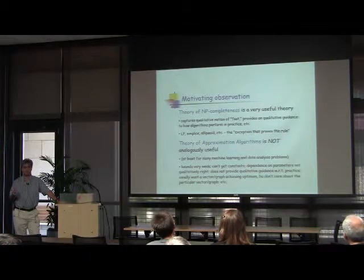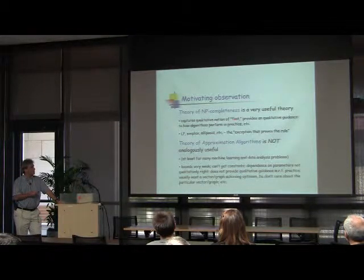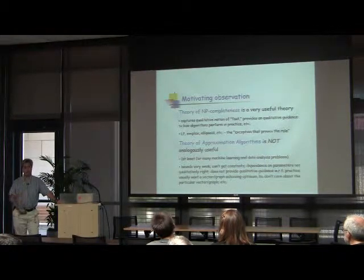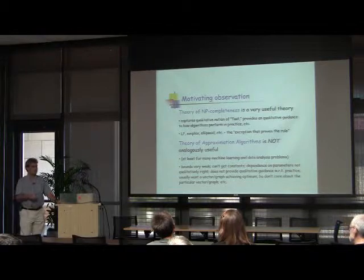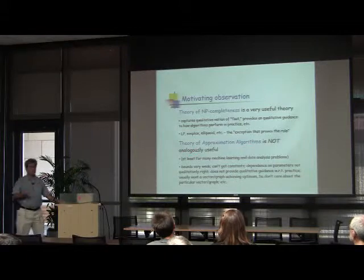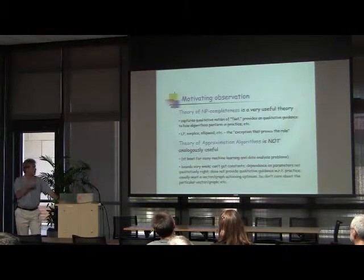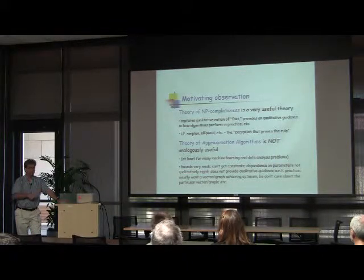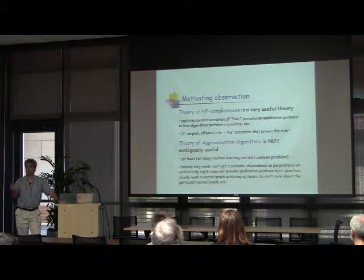It's an imperfect guide to practice, but it's a very useful theory. It provides a qualitative notion of fast, and qualitative insight into when algorithms will perform well or not. You heard about linear programming and some other things — in some sense this is the exception that proves the rule. In a wide range of large-scale data analysis applications, the modern theory of approximation algorithms is nowhere near as analogously useful. The bounds you get are very weak, you can't get constants, dependence on various parameters is not even qualitatively right, it doesn't provide analogous qualitative insight. So can we get beyond this?